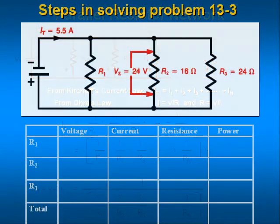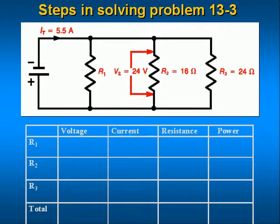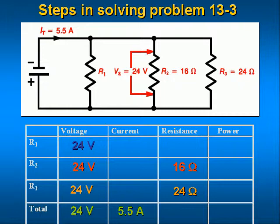Let's work a parallel network problem. Looking at this circuit, resistor R2 has a voltage across it of 24 volts. Since this is a parallel circuit, all of the branches will have 24 volts across them, and the power supply voltage is 24 volts also. Other data provided is the total current of 5.5 amps. R2 equals 16 ohms and R3 equals 24 ohms. No value is given for the resistance of R1.